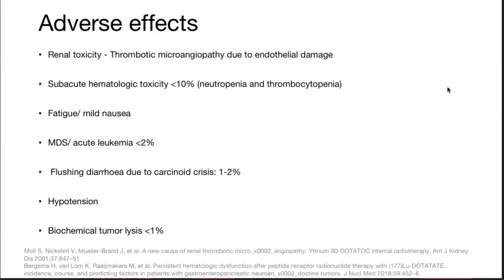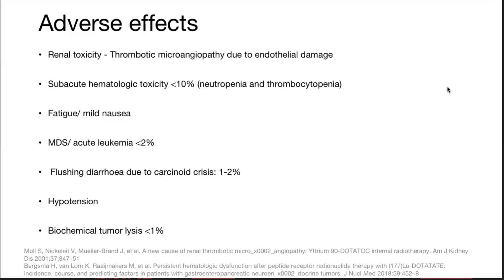Adverse effects of PRRT: renal toxicity — it causes thrombotic microangiopathy due to endothelial damage from beta radiation to renal vessels. It can also lead to neutropenia and thrombocytopenia. Apart from that, MDS — myelodysplastic syndrome — or acute leukemia can occur in less than 2%. Flushing, diarrhea, and carcinoid crisis can occur during administration in 1 to 2%; hypotension and tumor lysis syndrome in less than 1%.